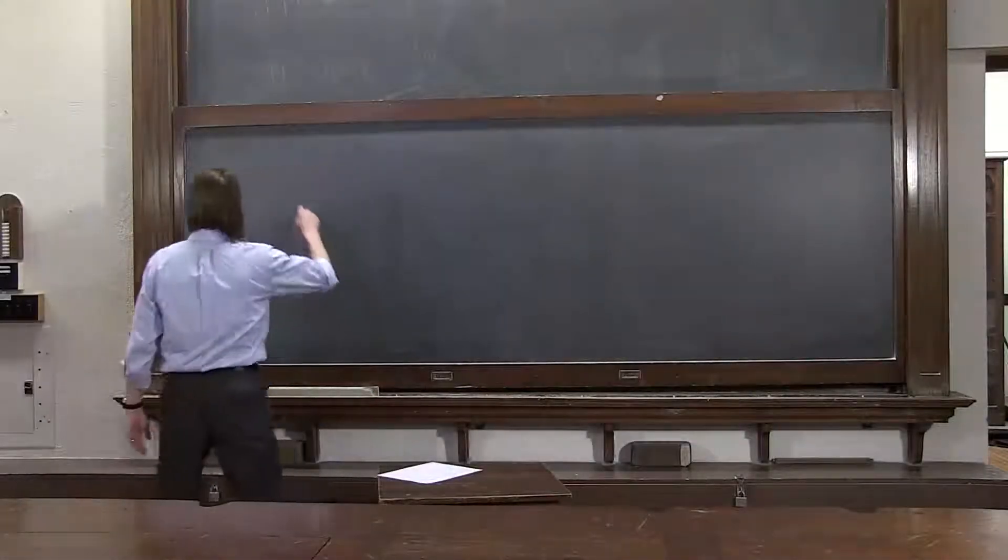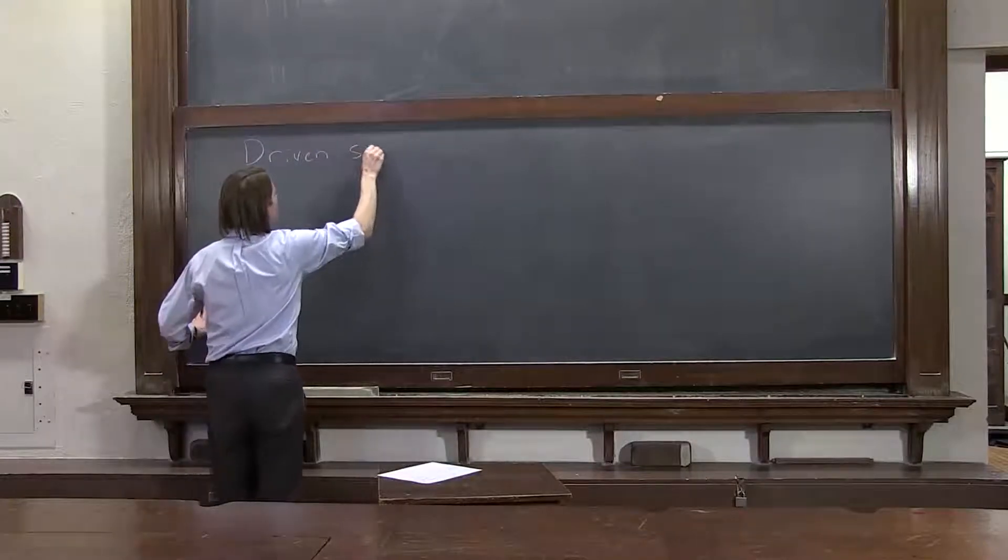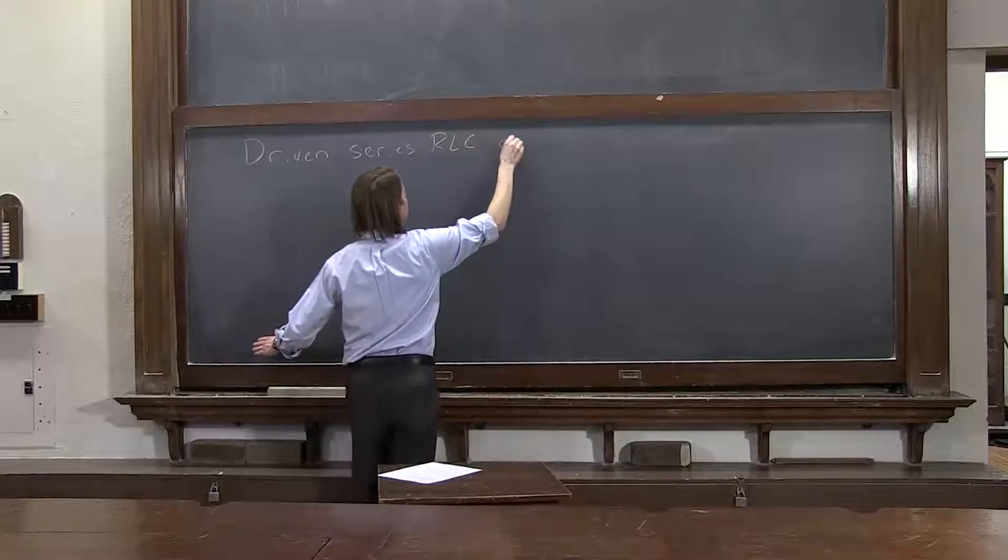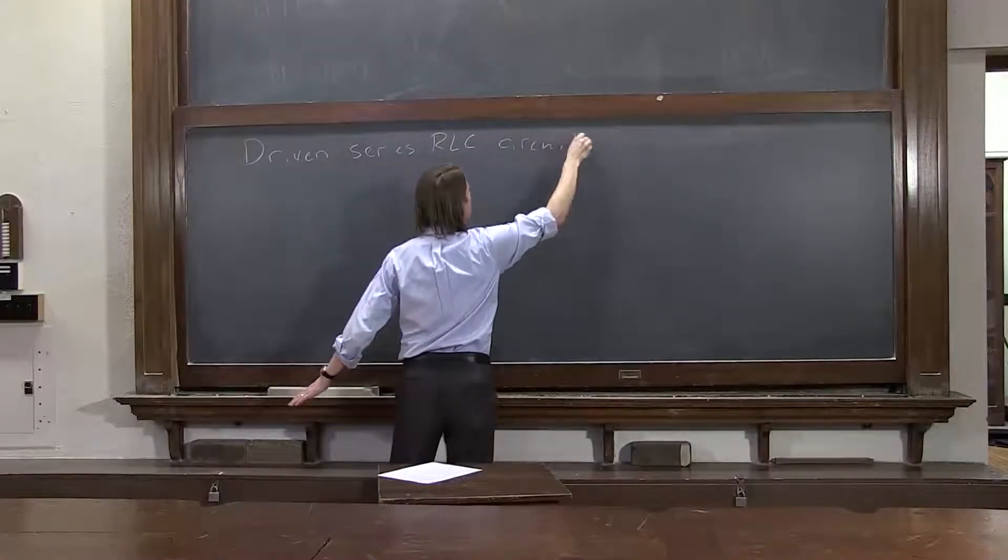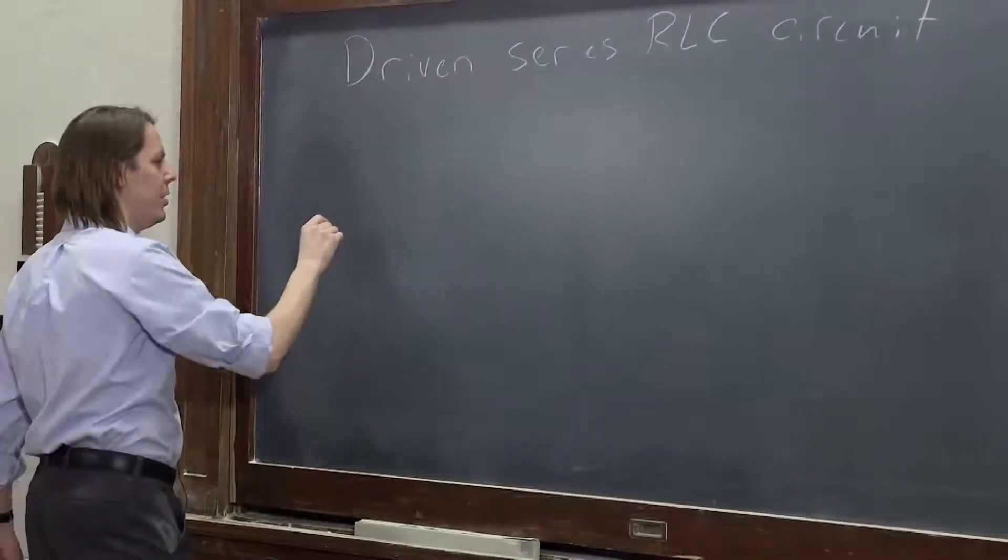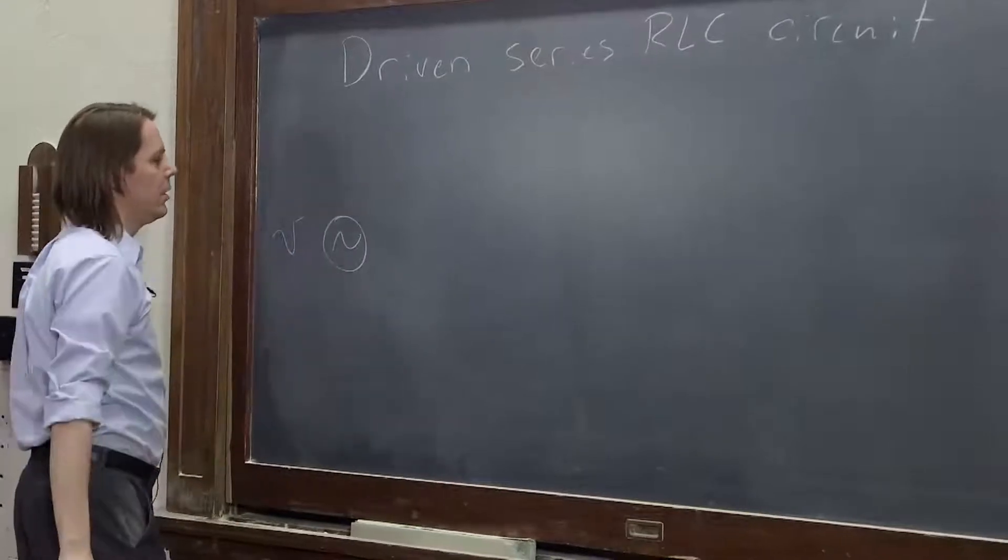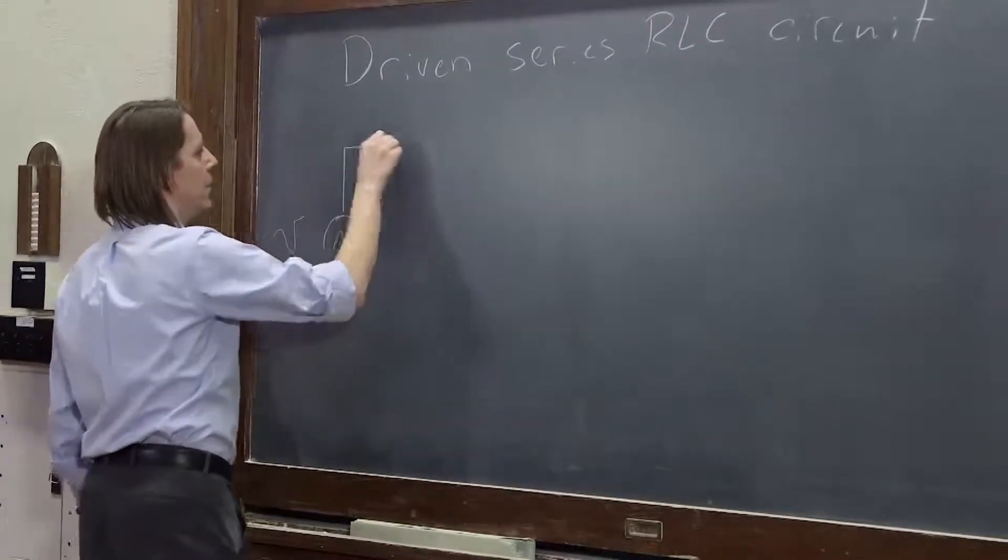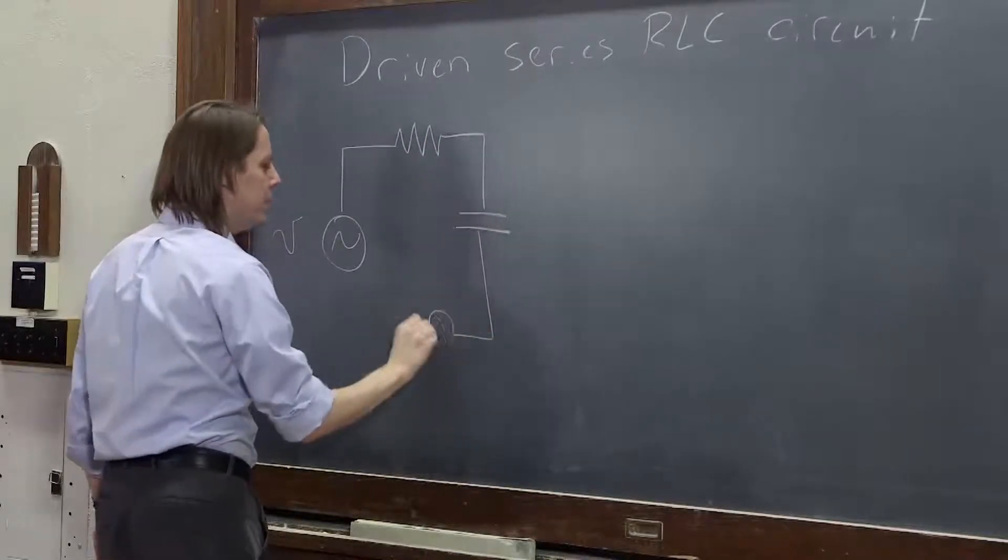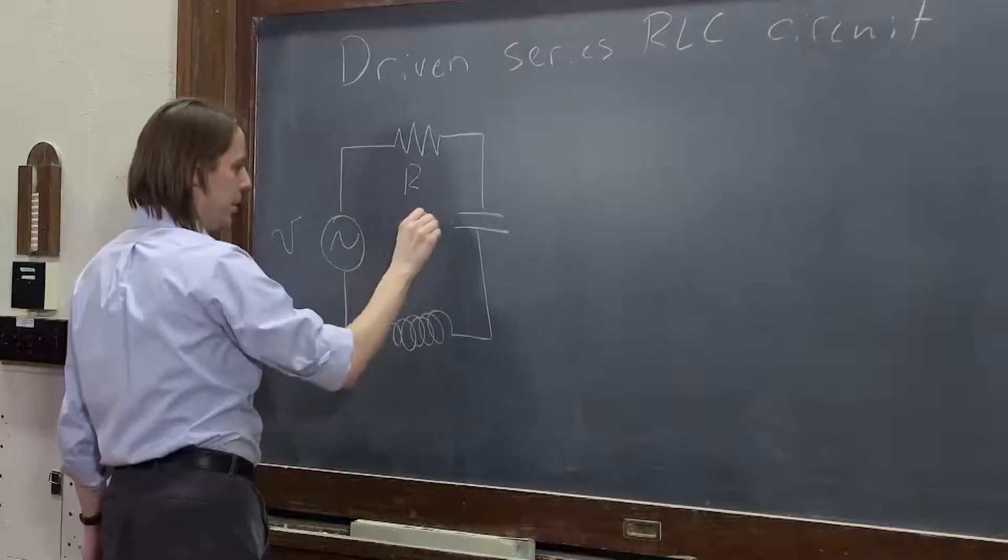Now we're going to put all the elements together and look at the driven series RLC circuit. And what we mean by that is simply we have an oscillating drive. It goes to a resistor and a capacitor and an inductor all in series.